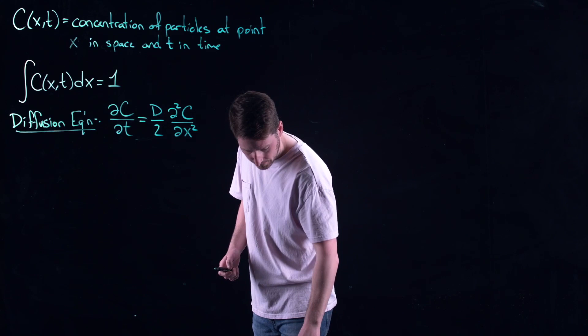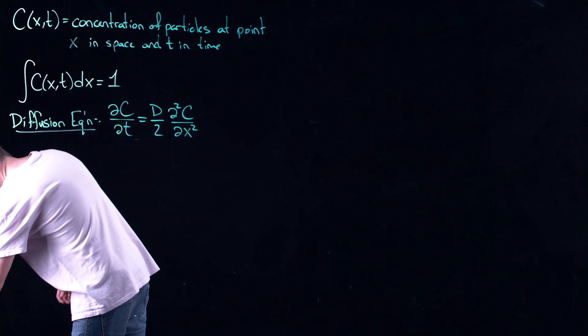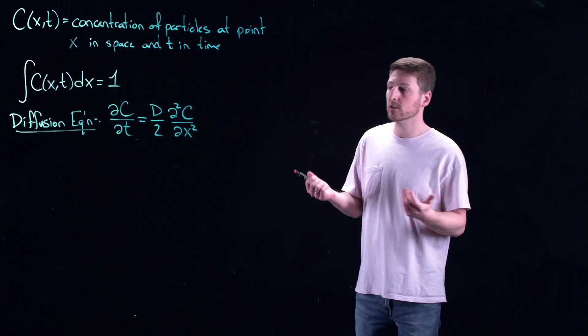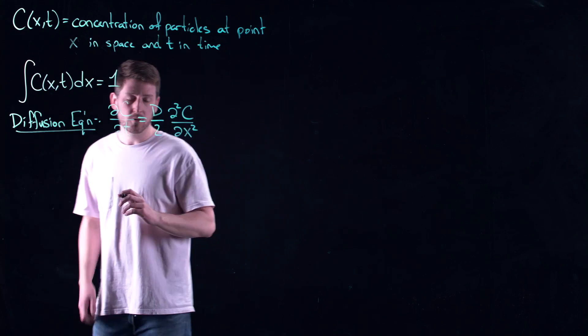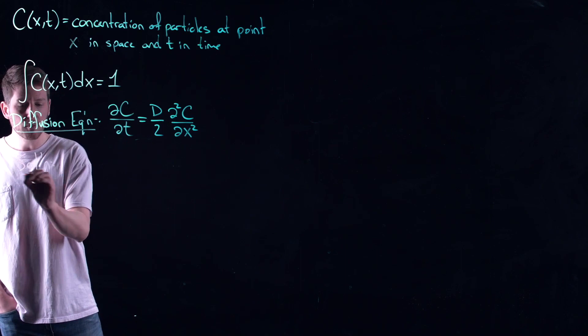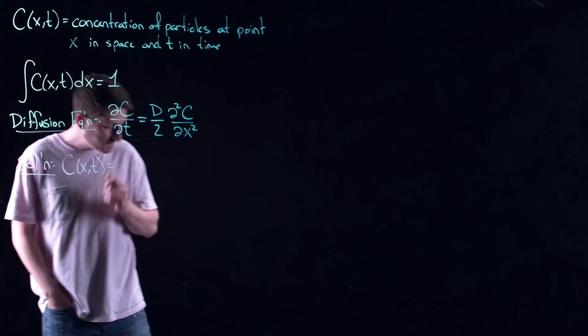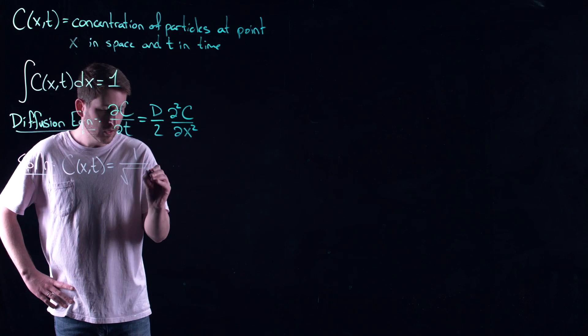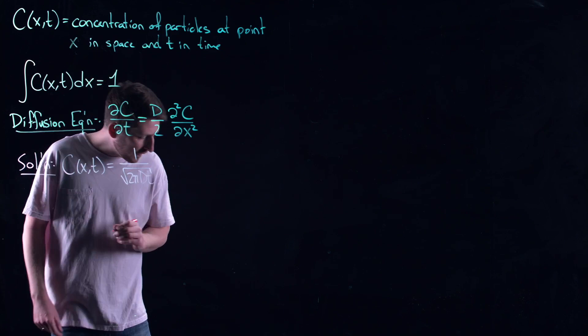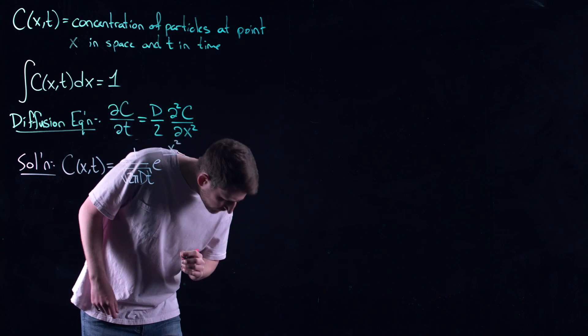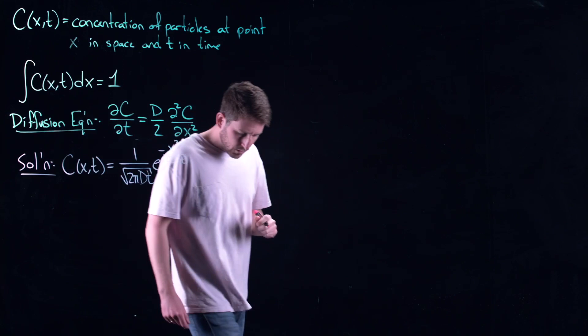Solving partial differential equations is not easy — that's left to an entire class on PDEs. So I'll give you a particular solution: c(x,t) = 1 over the square root of 2πdt, times e to the minus x squared over 2dt. You can see d showing up — that is the diffusion rate, how quickly this thing is spreading.